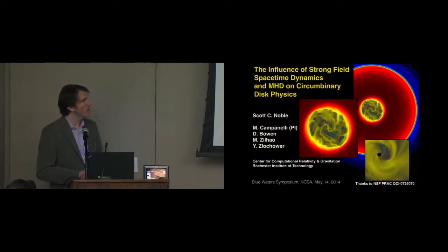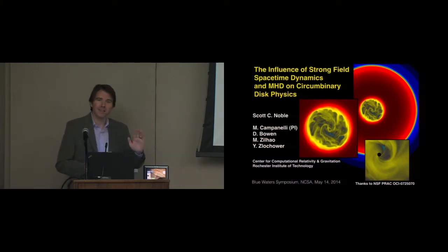Here is an illustration of the global simulation domain and then zoomed in pictures of the binary. Red here is the log of the density. The color scheme, which I will use consistently throughout the talk, is blue is low, red is high. This is the bulk of the disk surrounding the binary, and this is a tenuous gas that falls onto the binary. Here is a zoomed in picture of one of the black holes.